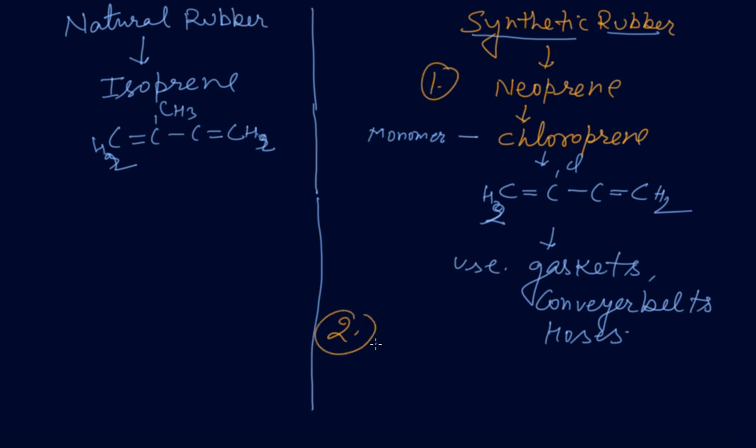BUNA-N is also synthetic rubber whose monomer I told you earlier. BUNA-N is also known as nitrile rubber. In this way our preparation of polymers is over.